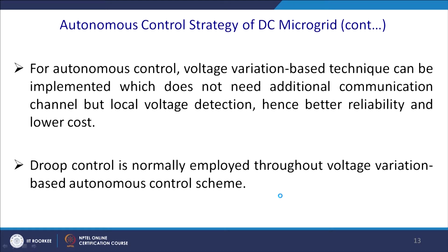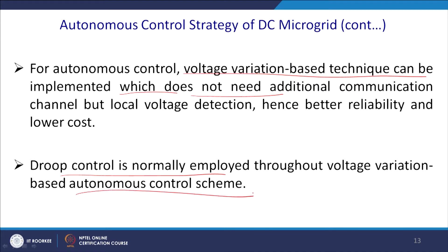For autonomous control, a voltage variation-based technique can be implemented which does not need an additional communication channel — only local voltage detection — hence providing better reliability and lower cost. Droop control is normally employed throughout the voltage variation-based autonomous control scheme, and it offers many advantages and redundancies.